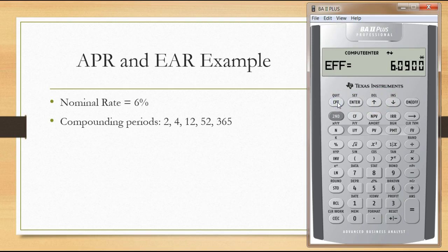This goes up as we use more compounding periods per year. With four - quarterly compounding, every three months - the effective rate increases to 6.1364 percent. If we change this to twelve for monthly compounding, we go back to the effective rate and compute.